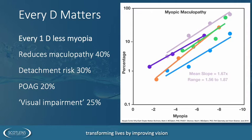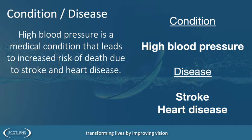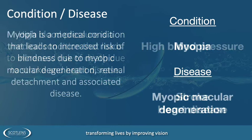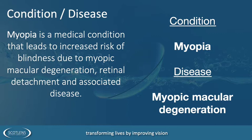In the general public, we have the condition of high blood pressure — a condition that leads to increased risk of death due to stroke or heart disease — and we have funding and patient awareness of it. What we need to do is promote myopia so the public understand it is a medical condition that leads to increased risk of myopic macular degeneration and in elderly life potential risk of loss of sight. Myopia is the condition we need to start treating to prevent the diseases.